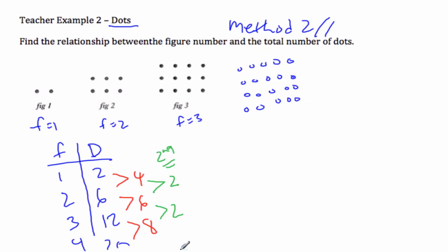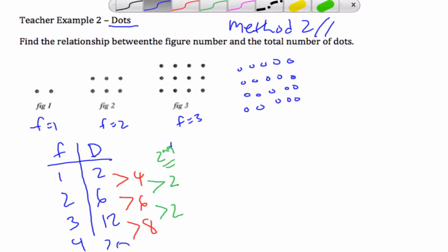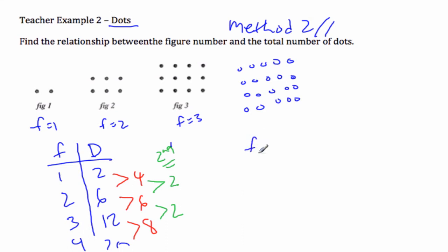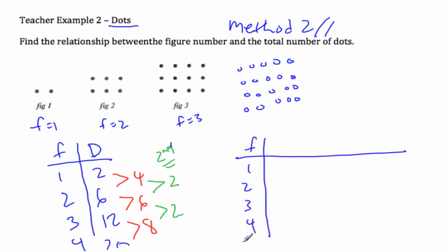We still are going to make our table. We know that it's second differences, so it's going to be an x-squared scenario. But if we look at our table really closely, let's make a table. Here's f: one, two, three, four.